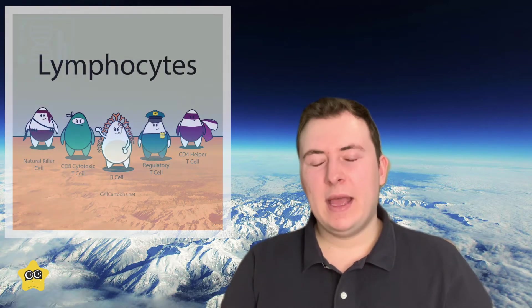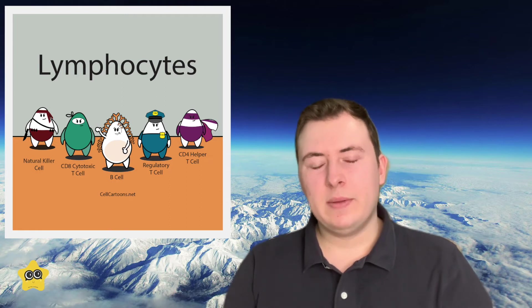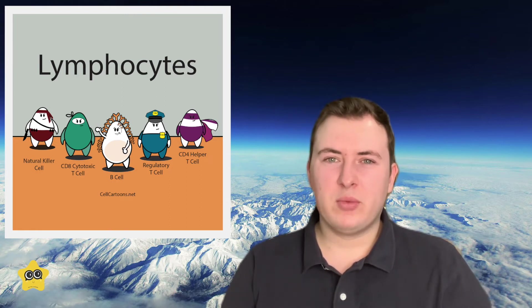I know, another list, but T, B, NK, and gamma delta T cells are all lymphocytes, which are essentially types of white blood cells.